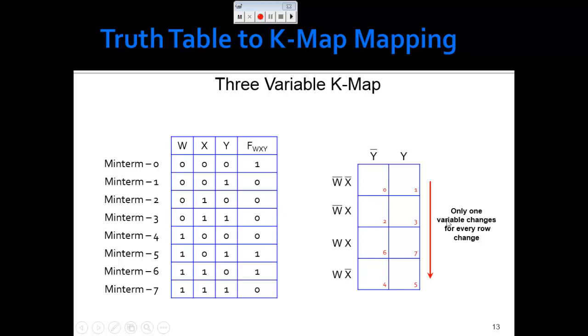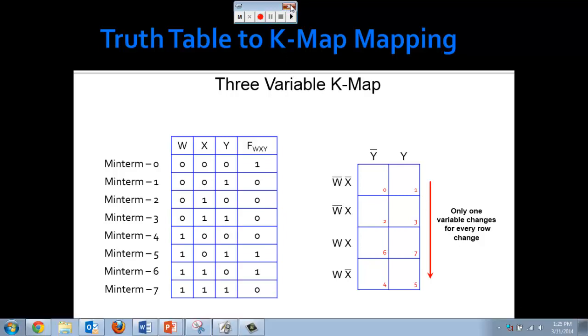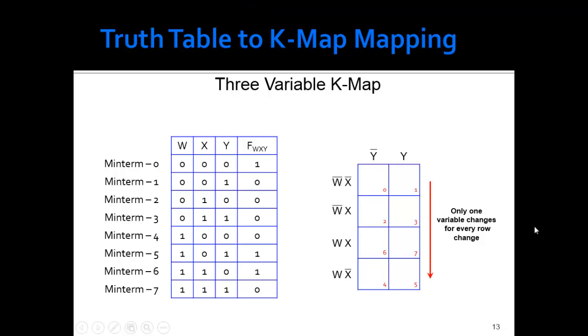Okay, let's look at this K-Map. So this is a 3-variable, so I have to have 8 cells just like I have to have 8 rows in my truth table. And I have labeled the top not W, not X, not Y. So I change one thing from here, not Y to Y.